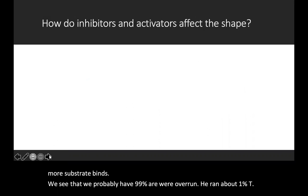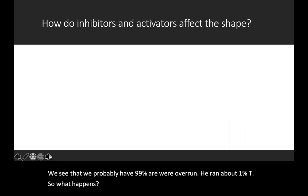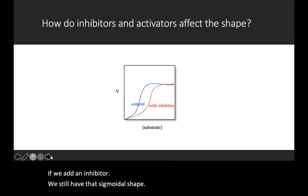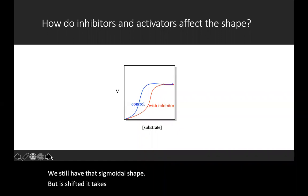So what happens if we have an activator and inhibitor in this process? Well, if we add an inhibitor, we still have that sigmoidal shape, but it's shifted. It takes more substrate to achieve what we had previously done with our blue curve here.